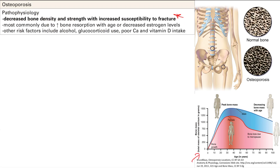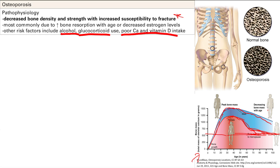This graph shows how your bone mass grows when you're younger, peaks around age 30, and after that it's all downhill. When your bone mass gets too low, that's osteoporosis — so as you get older, you're more at risk. If you're female, you're more at risk because you have overall lower bone mass. Additional risk factors include alcohol, steroid use, and poor calcium and vitamin D intake, since bone mineralization requires calcium and phosphate.